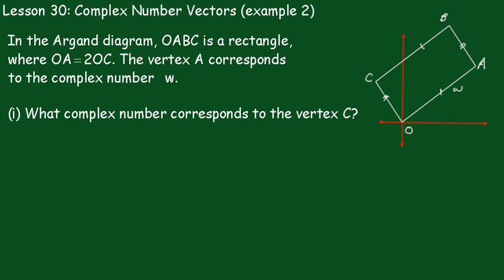Lesson 30: Complex Number Vectors, Example 2. In the Argand diagram, OABC is a rectangle where OA is twice OC. The vertex A corresponds to the complex number W. What complex number corresponds to the vertex C?